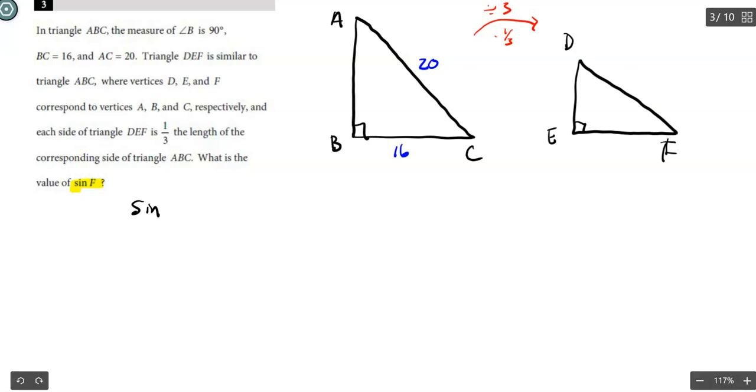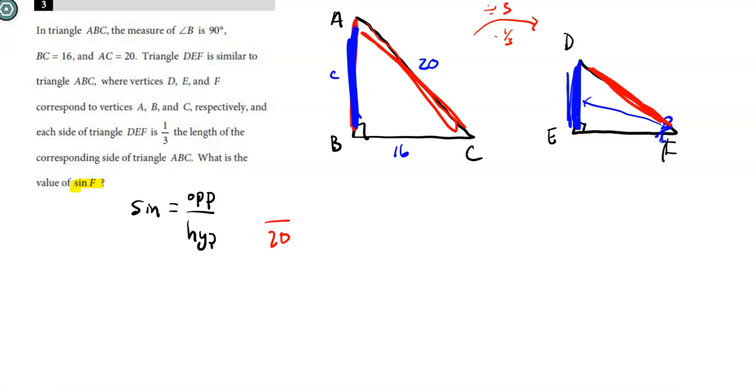Remember, sine is opposite over hypotenuse. If I'm standing on F and I want to know what the sine of F is, it's going to be this opposite leg over the hypotenuse. So we want that left leg over the hypotenuse. To get the real numbers, I've got to use the triangle on the left. The problem is I don't have this side. I don't know that side, but I do know the hypotenuse is 20.